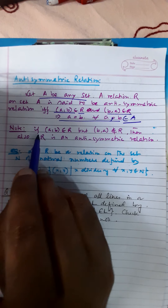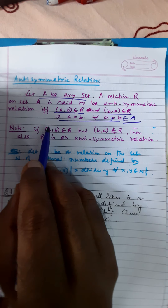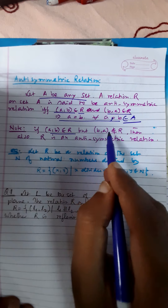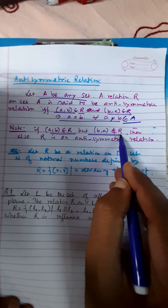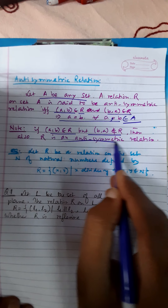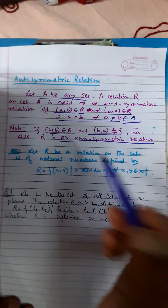Note — we have to keep in mind: if A comma B belongs to R but B comma A does not belong to R, then also R is an anti-symmetric relation.